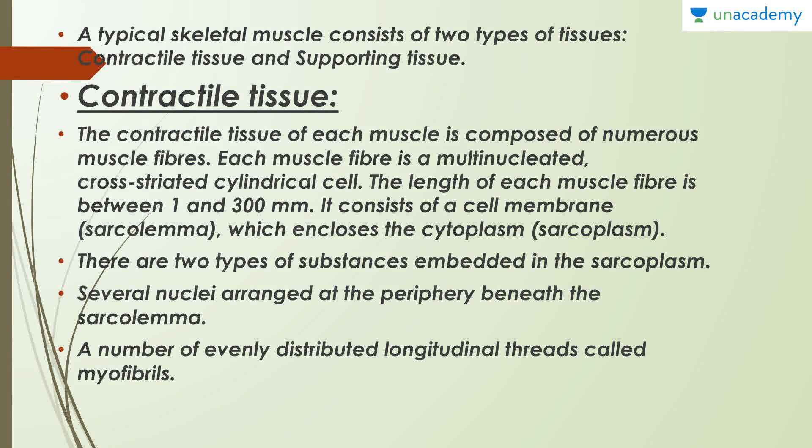A typical skeletal muscle consists of two types of tissues: the contractile tissue and the supporting tissue. In this chapter we're going to concentrate on contractile tissue because we're concerned with the physiology of contraction and how the muscle moves. The contractile tissue of each muscle is composed of numerous muscle fibers.